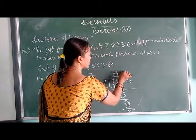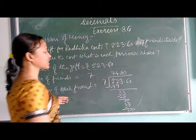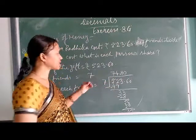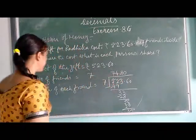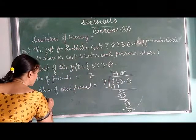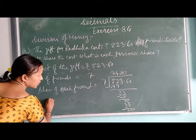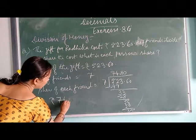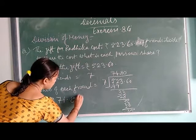So your last statement — what is this? This is the share of each friend. Share of each friend is equal to 74.80 rupees.